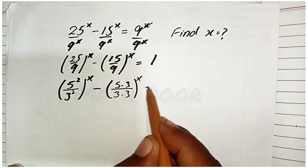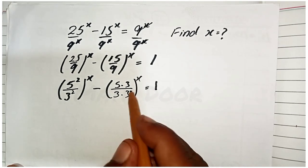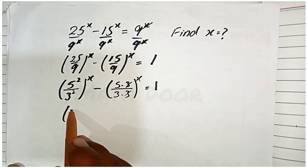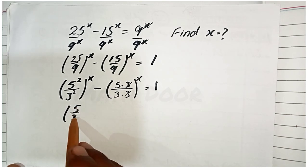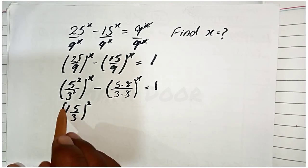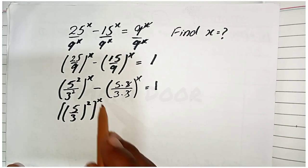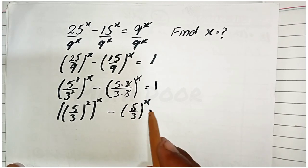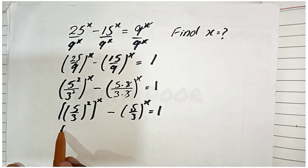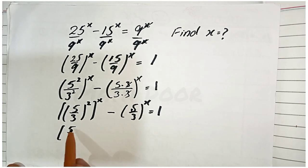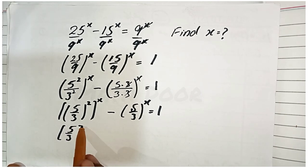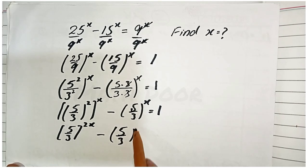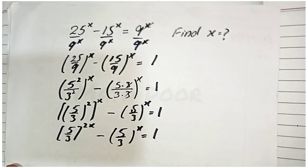So we have (5·3)/(3·3) power x equal to 1. The 3 cancels, and applying the power rule, this becomes (5/3)² all to the power x, minus (5/3)^x equal to 1. We can write this as (5/3)^(2x) minus (5/3)^x equal to 1.